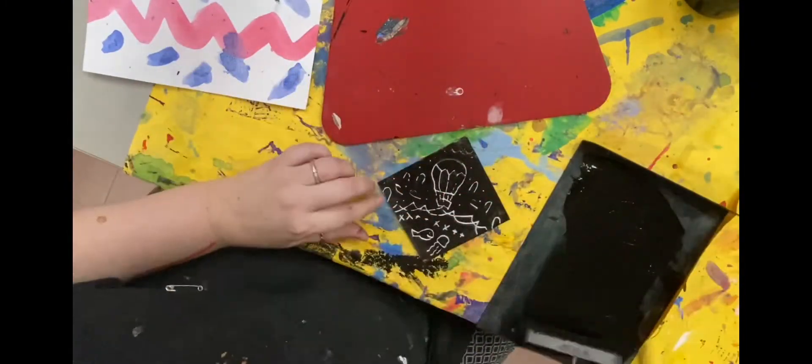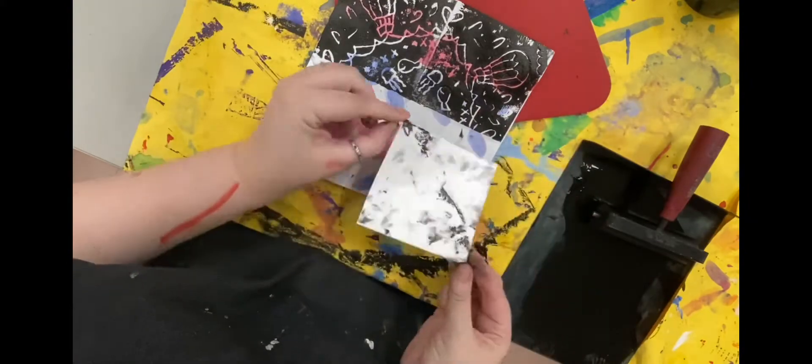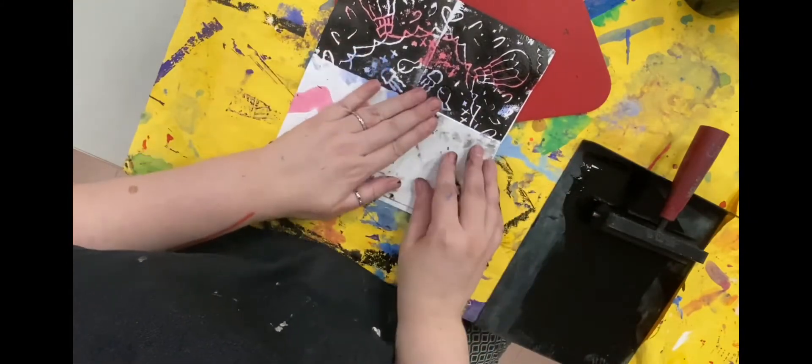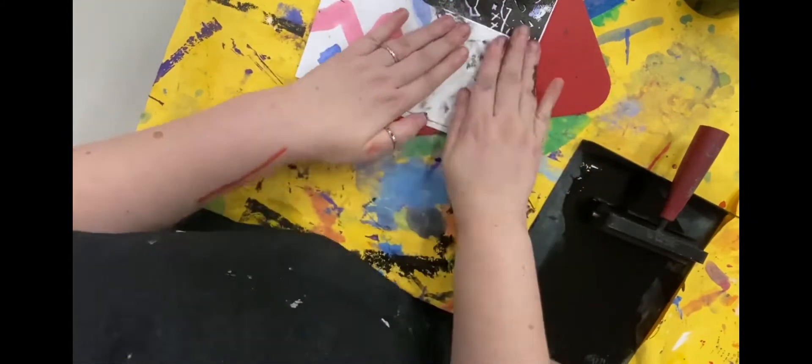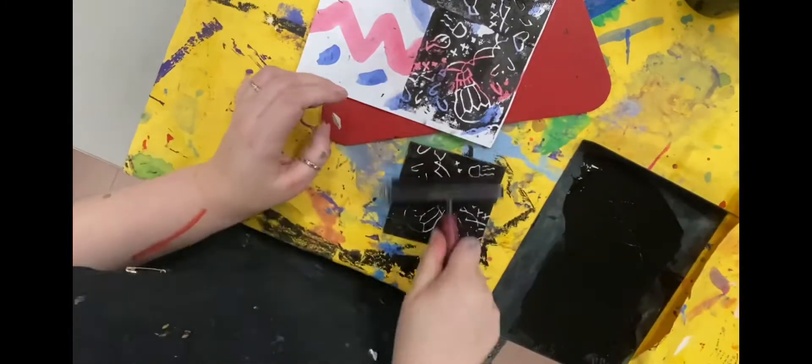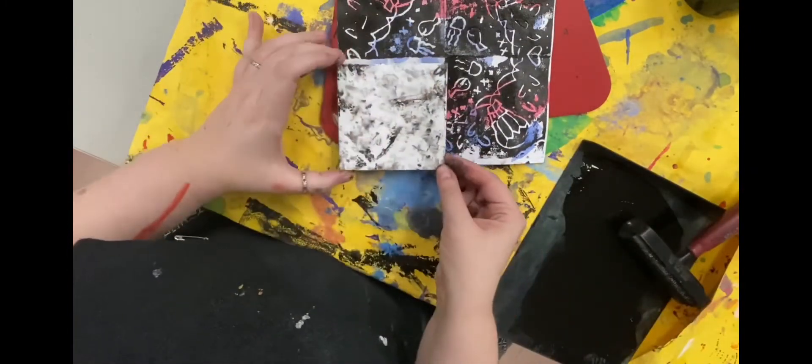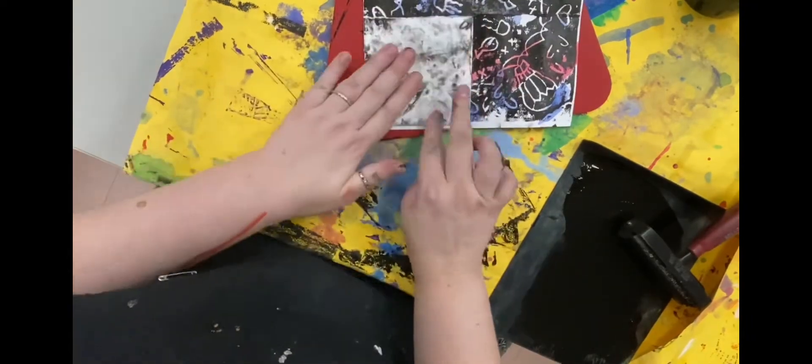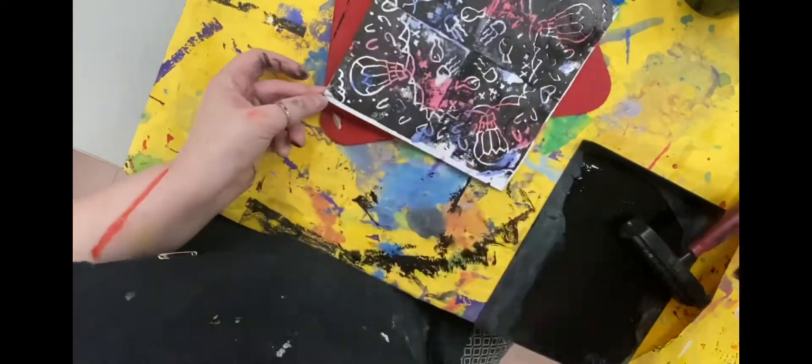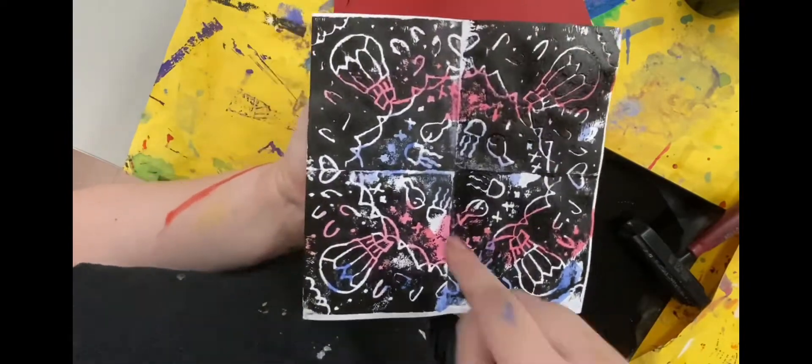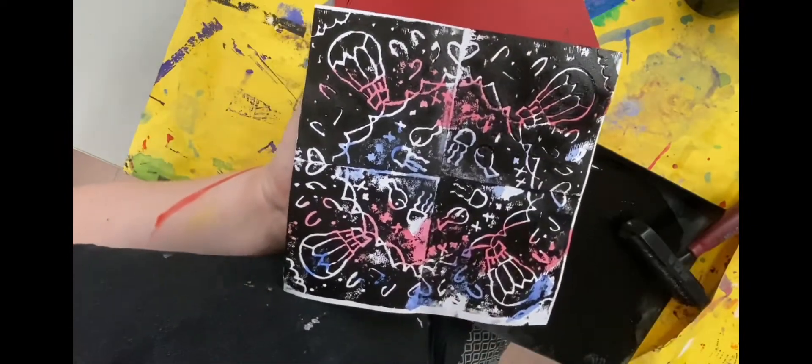Now you're going to do the same thing to the last two sections, putting the M towards the middle and printing it evenly all the way around. Once you remove your plate for the last square, you'll see how the design is connected all the way around in a radial design.